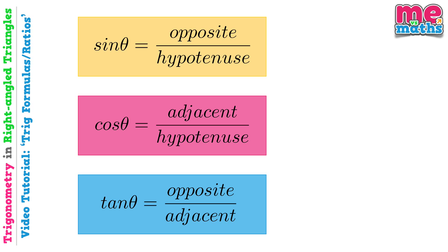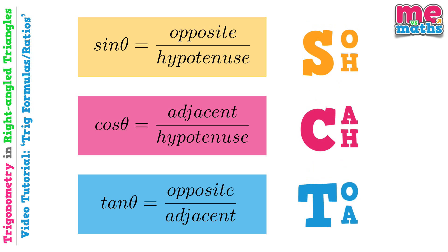Now to help us remember these, there's a phrase that is often used, and that phrase is SOH-CAH-TOA. It's just a nice little prompt to help you remember these three different formulas. So how does it work? SOH-CAH: the S stands for sin theta, the O for opposite, and the H for hypotenuse. CAH: the C stands for cos theta, the A for adjacent, and the H for hypotenuse, and so on — I'm sure you get the idea.